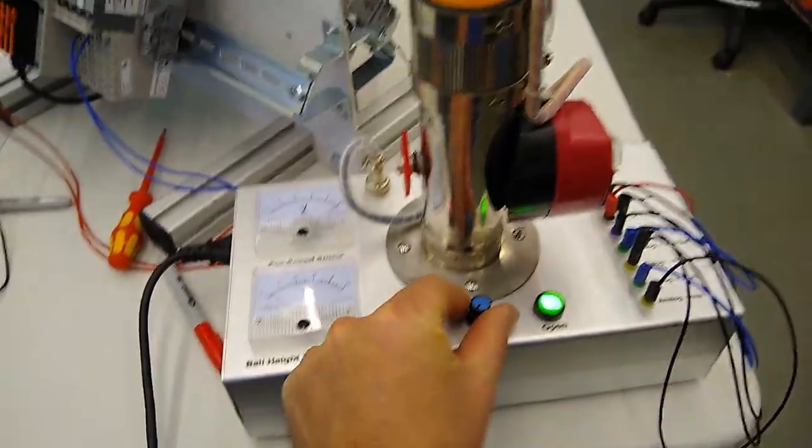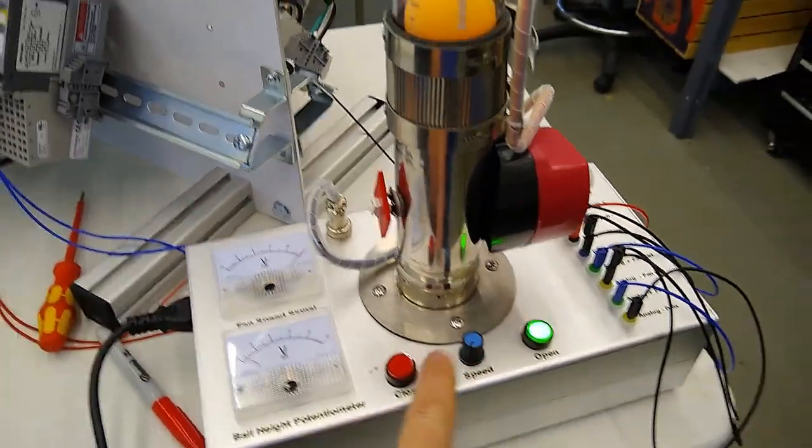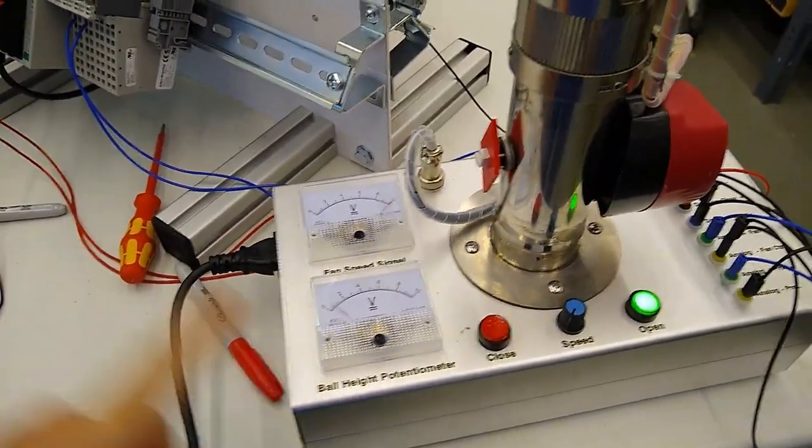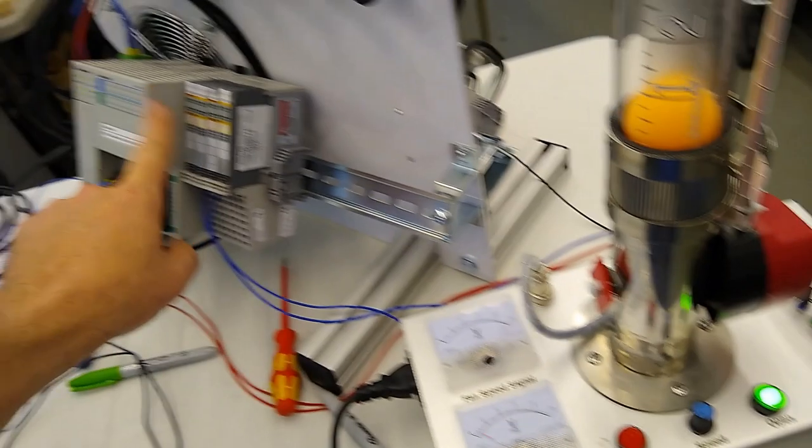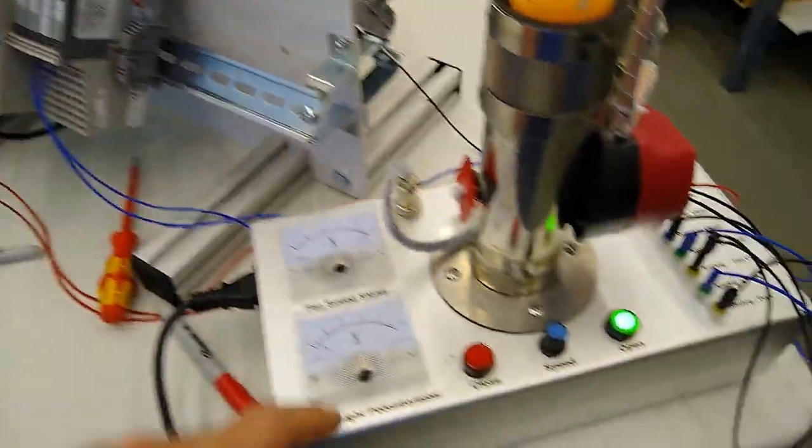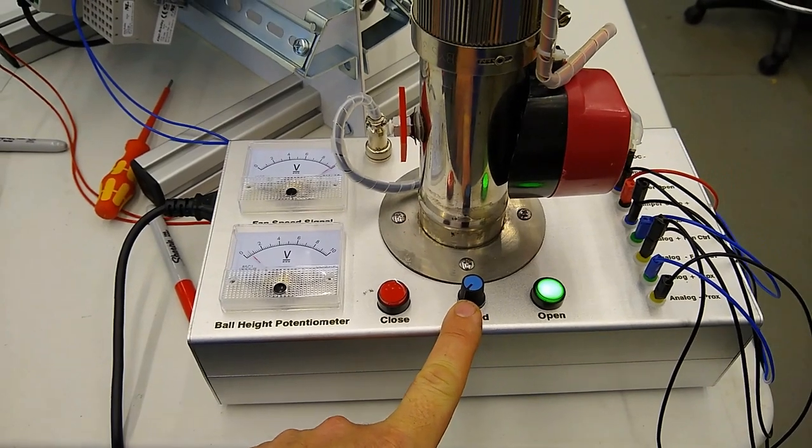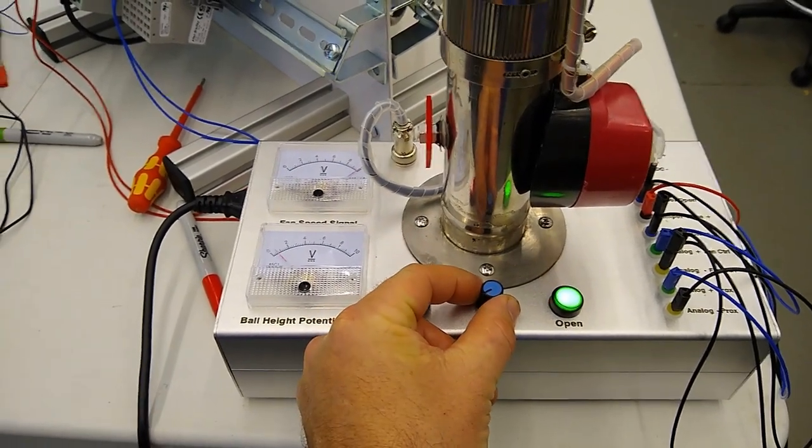And then it actually has a manual speed control here which is tied in with our voltage command. So right now I am sending 10 volt from our CompactLogix PLC but I have this cranked all the way down and this allows some really interesting variability that we're going to talk about.